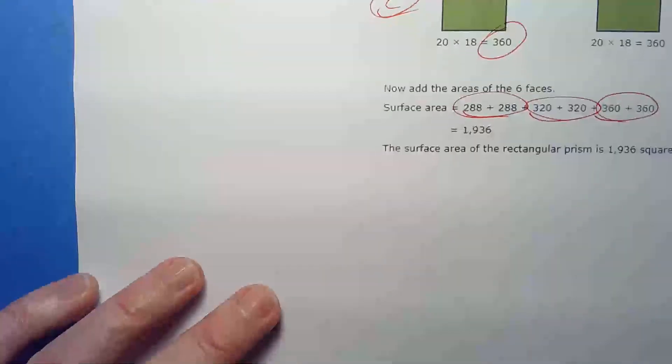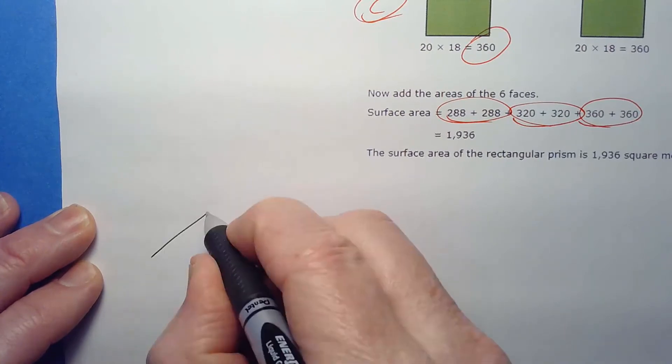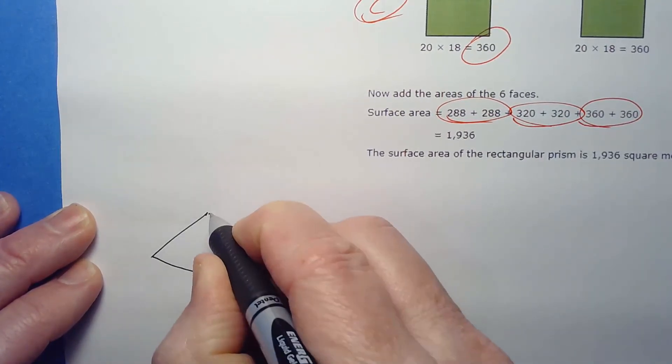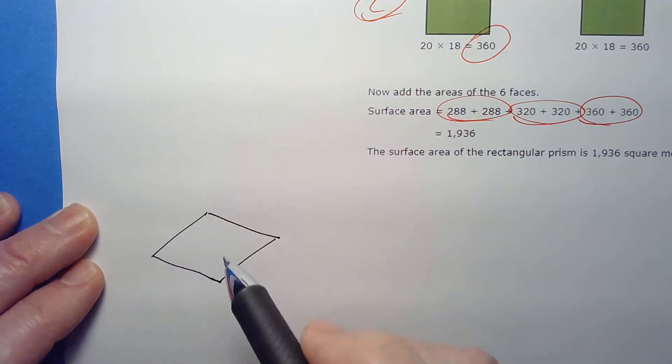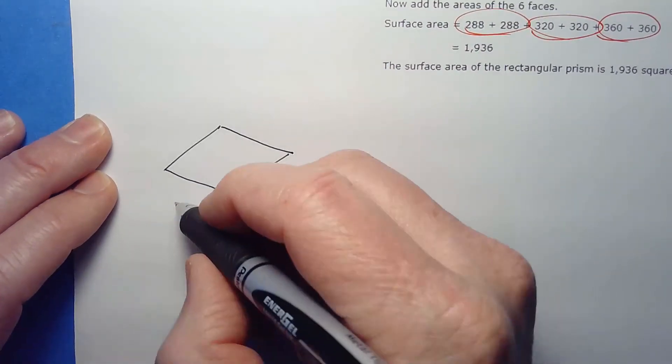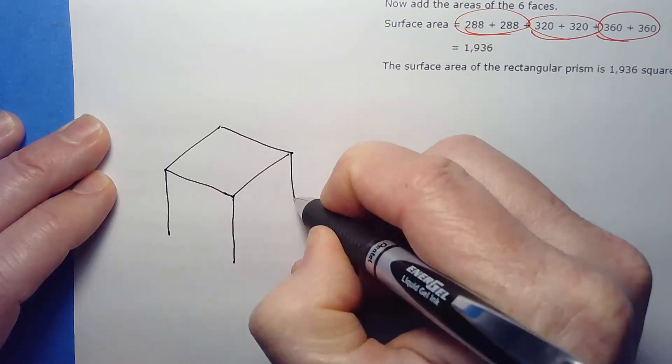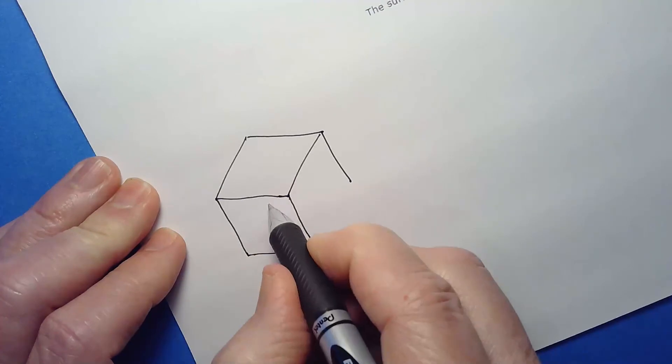That's why there's twice as many. So if you were to add them all up, you got 288 but there's two of them, you got 320 there's two of them, there's 360 there's two of them. And yeah, if I was doing the work, what I probably do, you're not gonna have a printout of this, you're probably gonna have something like this.